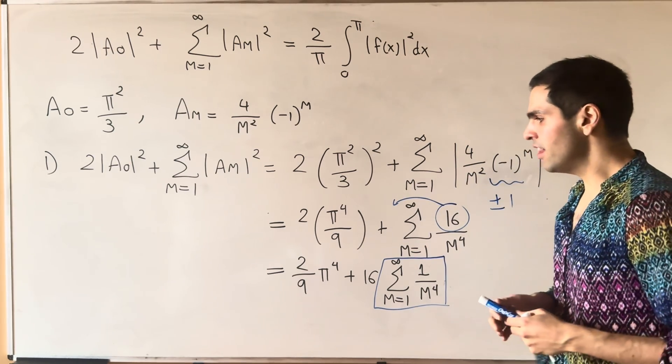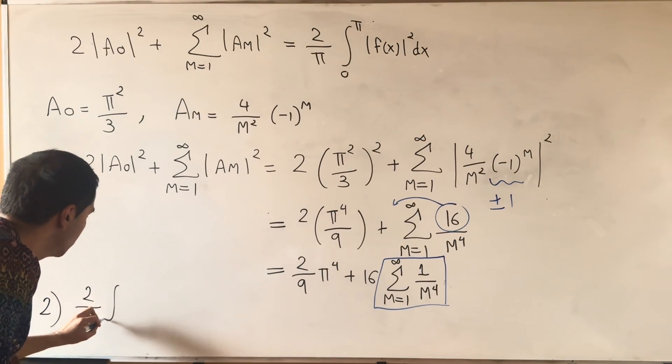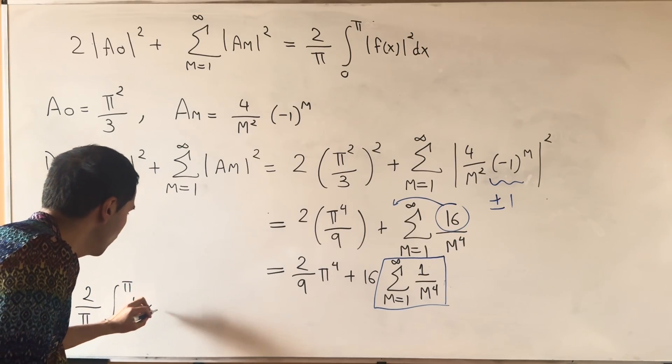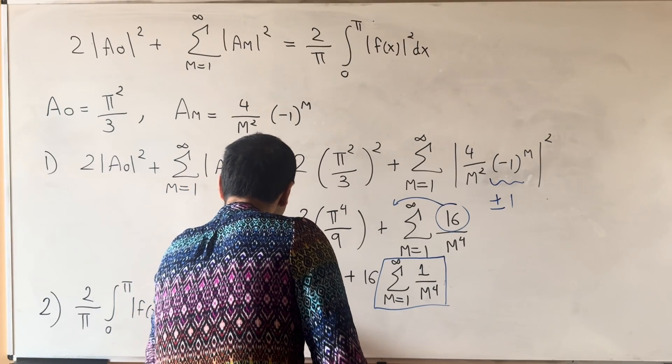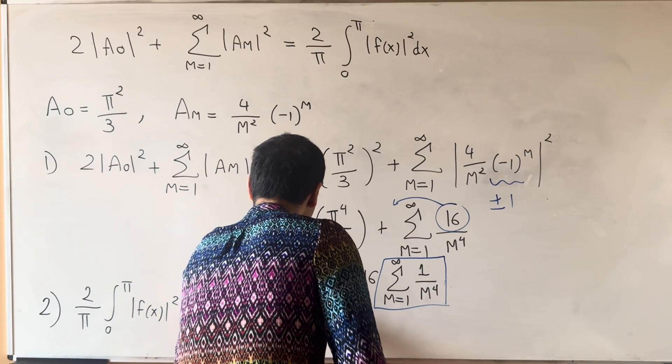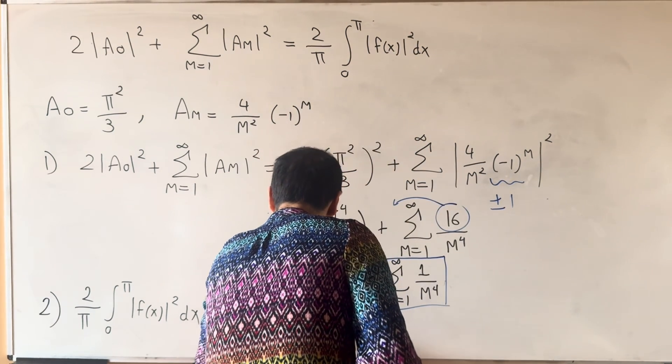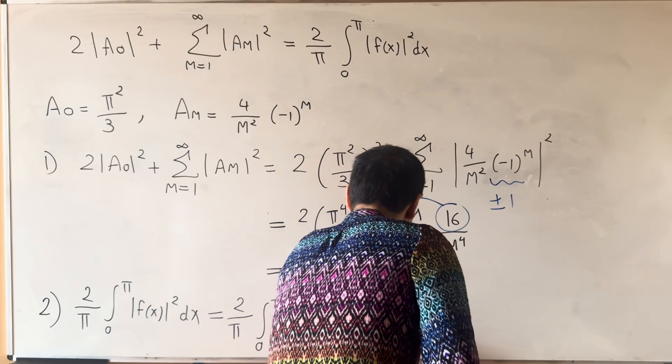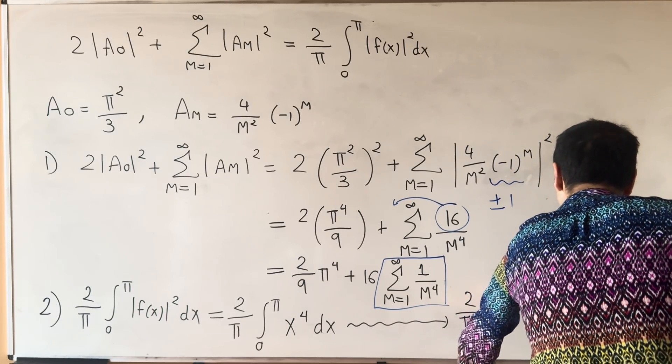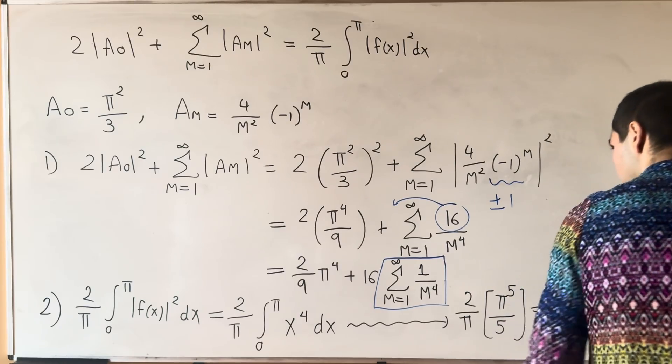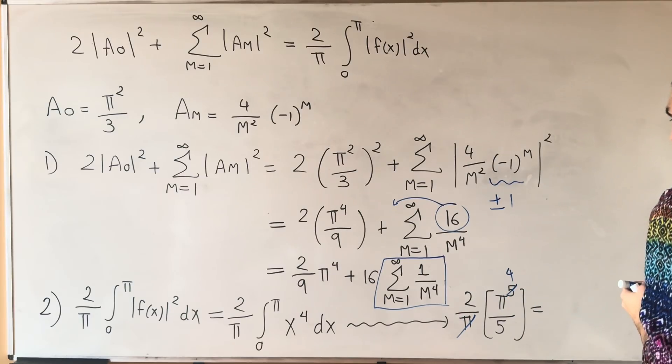So that was on the one hand. On the other hand, let's evaluate that integral. So let me try to do it here. 2 over pi integral from 0 to pi f of x squared dx that becomes 2 over pi integral from 0 to pi. So f of x is x squared. So if you square it, you get x to the 4th dx and kind of what this gives you that is 2 over pi and then pi to the 5th over 5 and which simplifies nicely again. So I think we get 2 fifths pi to the 4th.